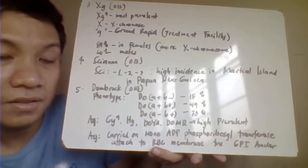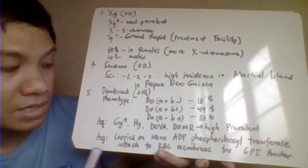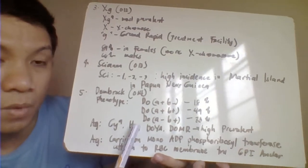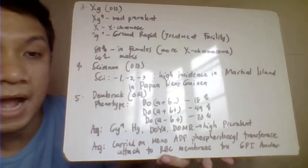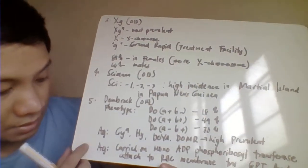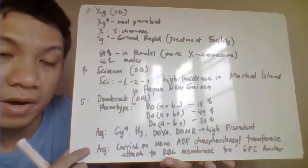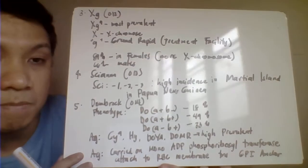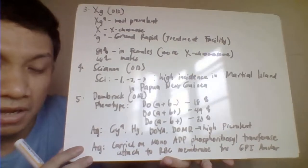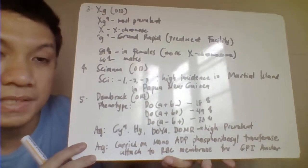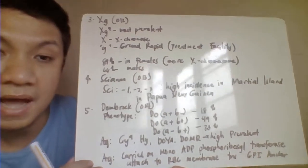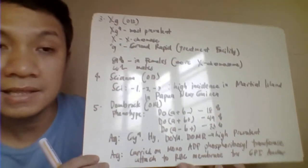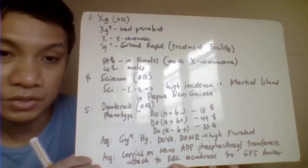Aside from that, your Dombrock blood group system also includes the antigens GY A, HY, DO A, and we have also DOMR, which are your high-prevalent antigens. The antigens of your Dombrock blood group system could be found on the mono-ADP phosphoribosyl transferase linked with RBC through your GPI anchor. And then again, antibody for this one is also an IgG antibody.